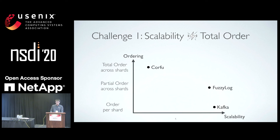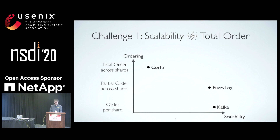For example, Taobao requires millions of database writes per second at its peak. At the other extreme, Kafka theoretically scales arbitrarily but provides no ordering guarantees for records in different shards. FuzzyLog makes a balance — it partially orders records across shards at a relatively small cost in scalability.